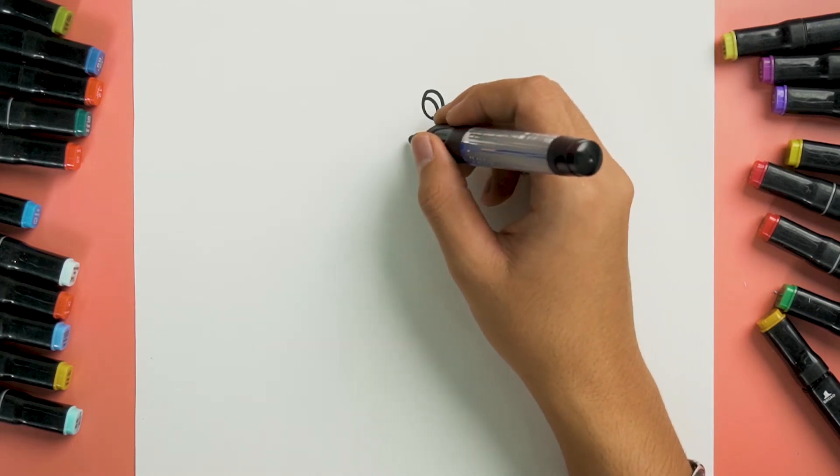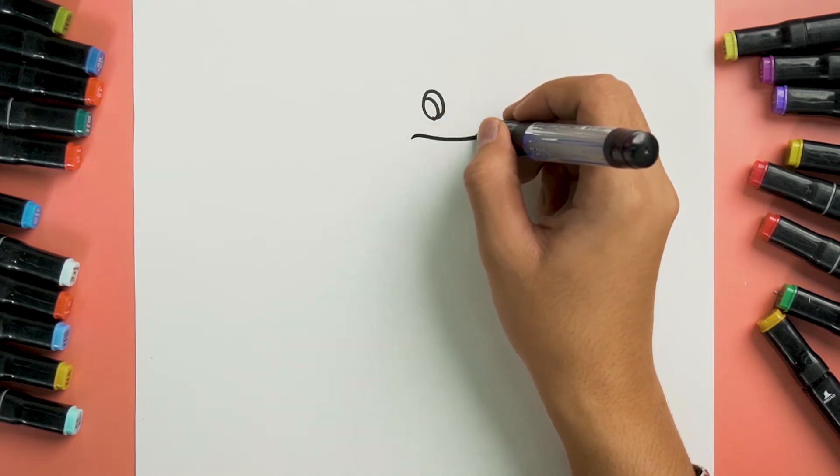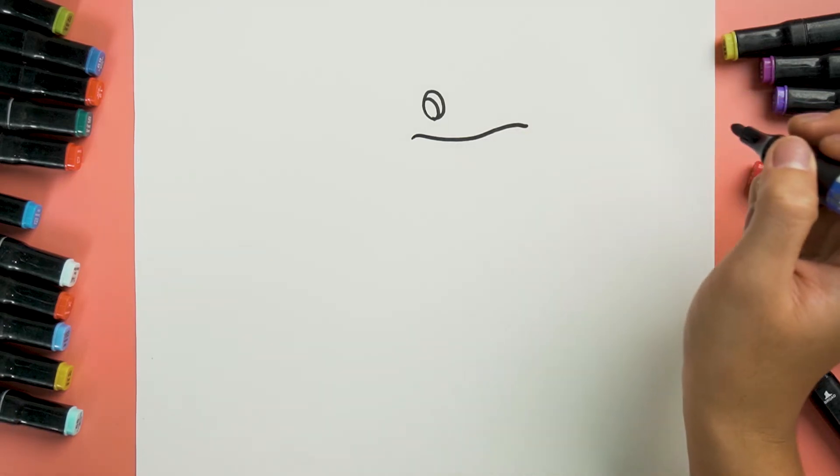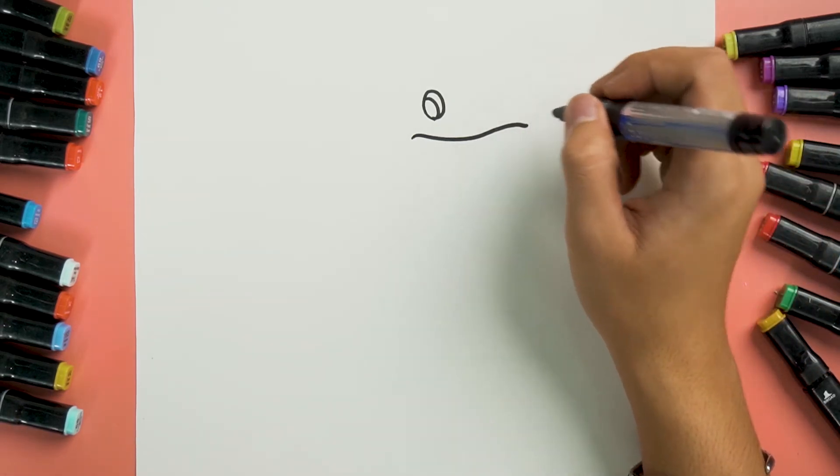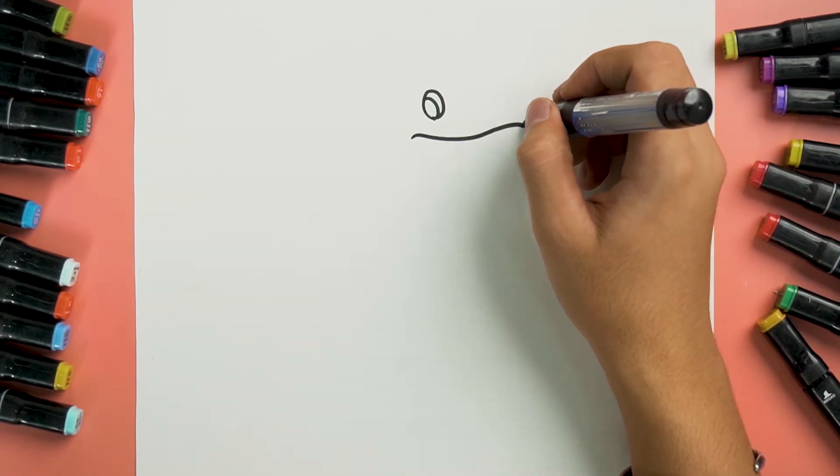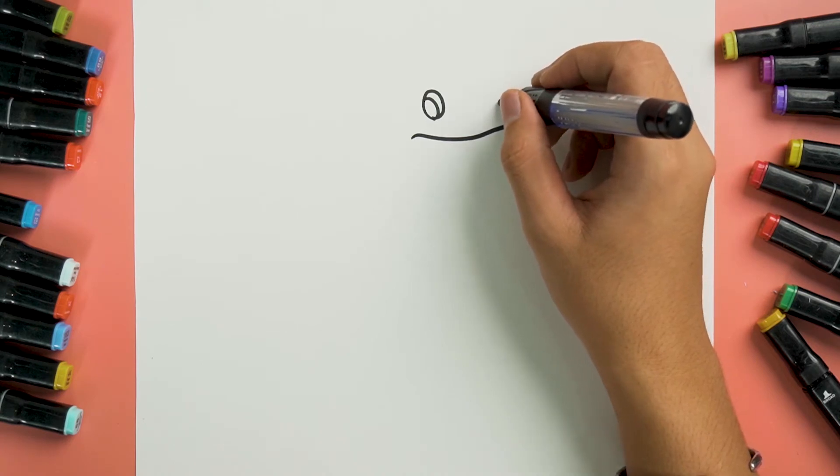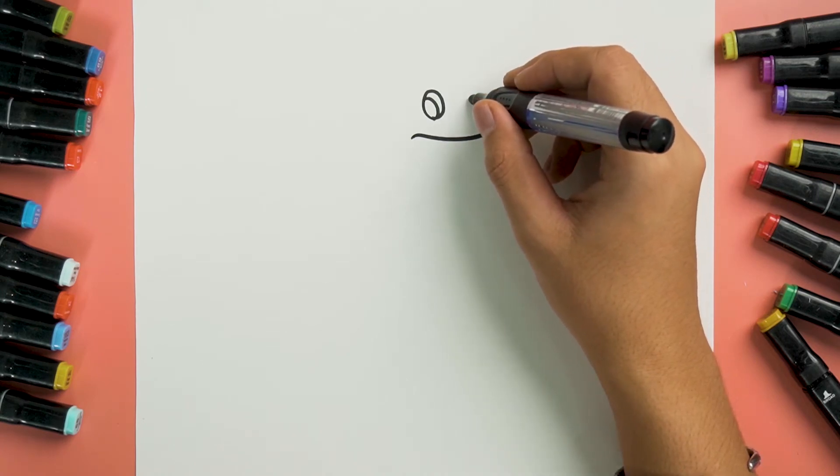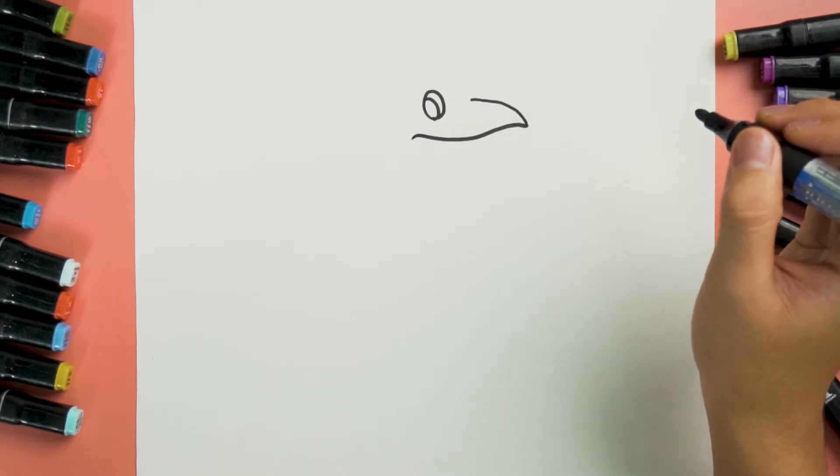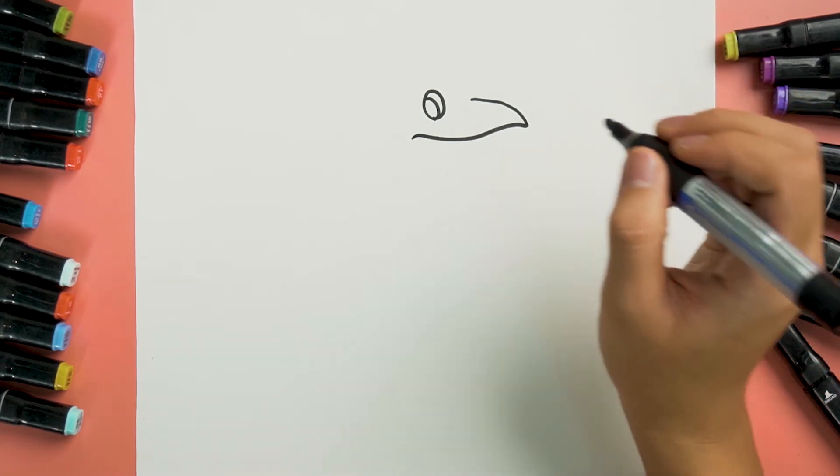Okay, now we will draw nose and mouth. Draw a long wavy line under the eye here. And then draw another line towards the eye. We have a nose now.